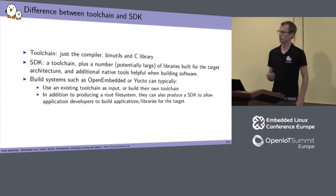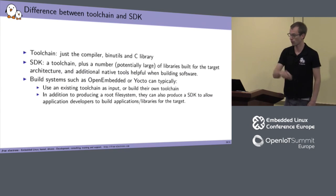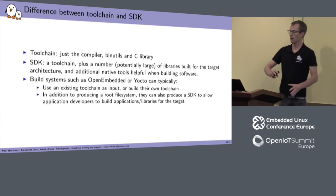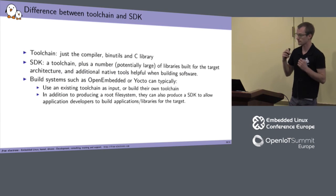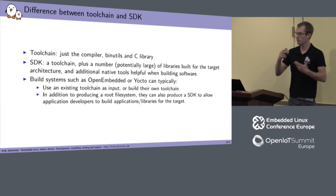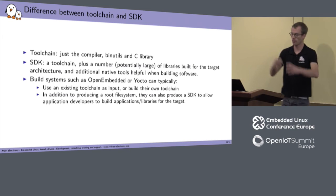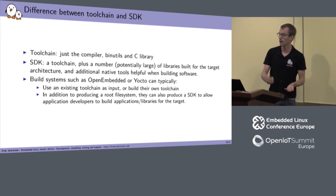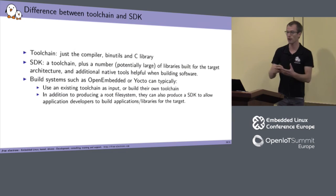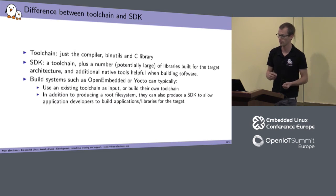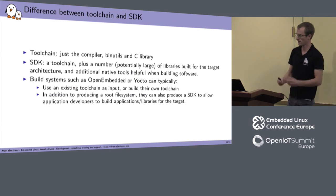There's a distinction between a toolchain and an SDK. A toolchain in the strict sense is just the four components: compiler, Binutils, C library, and kernel headers. An SDK is a toolchain augmented with additional libraries that match what's available on your target — networking, crypto, graphics libraries and their headers. An SDK allows you to build user space applications that link against those libraries and run them on the target. So an SDK is really more than a toolchain.